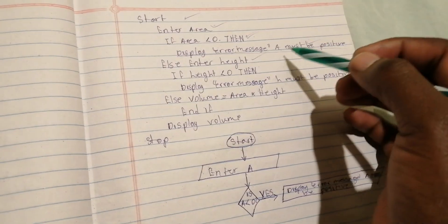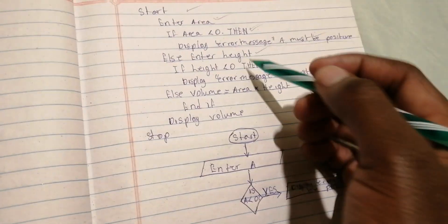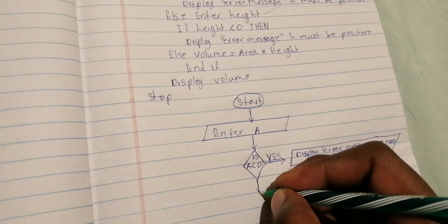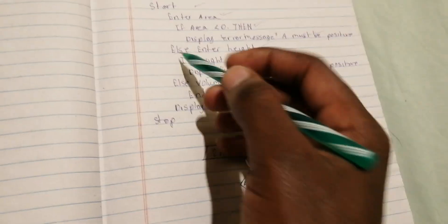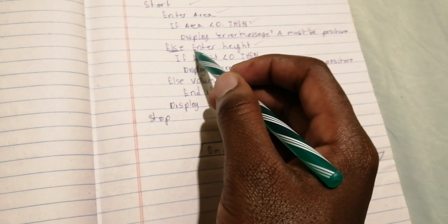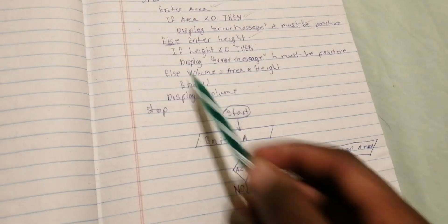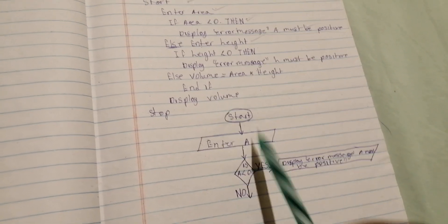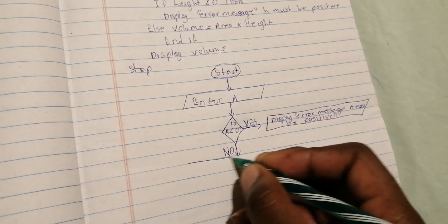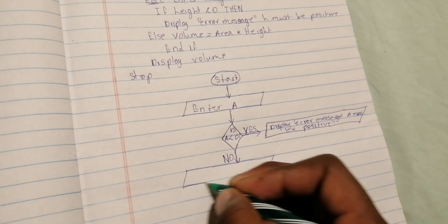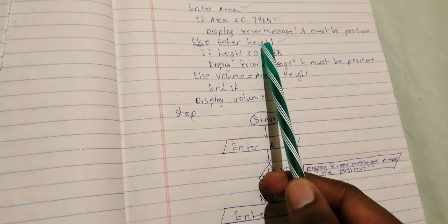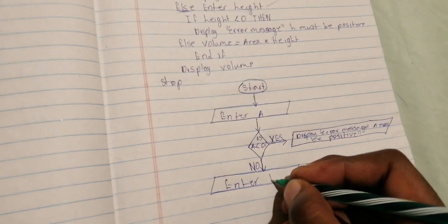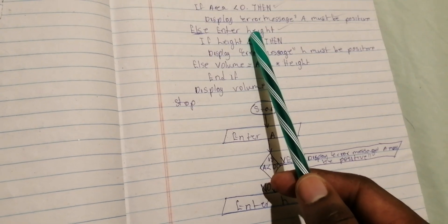The next step says 'Else — Enter height'. For 'Else', you draw an arrow going down from the diamond and next to that arrow you write 'No'. Then for 'Enter height', since 'Enter' is an input, you draw a parallelogram and inside it you write 'Enter height'.